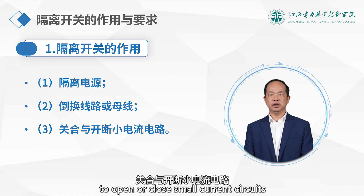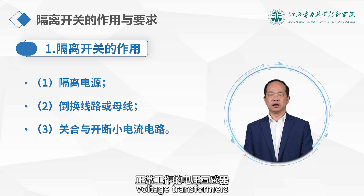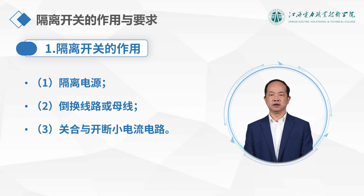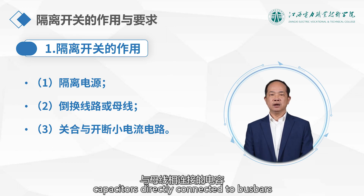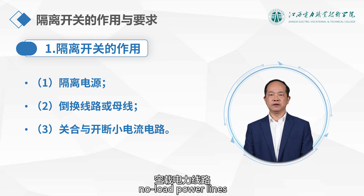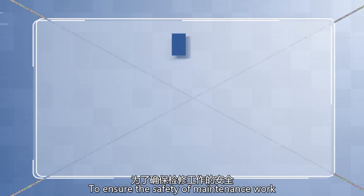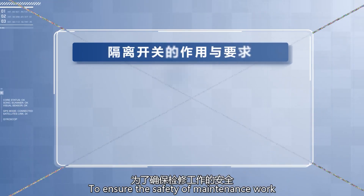Third, to open or close small current circuits. They can be used to open or close voltage transformers, surge arrestor circuits, bus bars and capacitors directly connected to bus bars with capacitance currents no more than 5A, and no-load power lines with magnetizing current no more than 2A, and no-load transformers, etc.